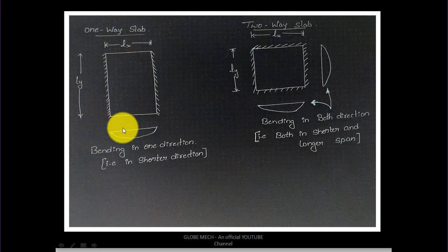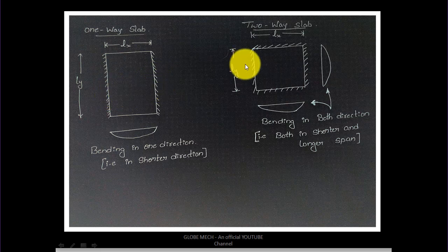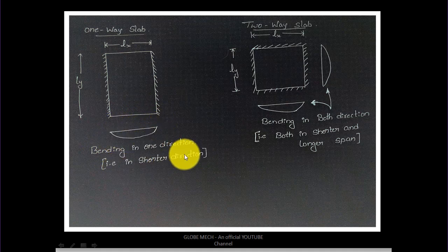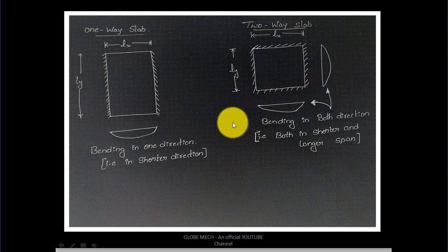In a one-way slab, bending takes place in only one direction — the shorter direction. Also, a one-way slab is supported only on two supports. In a two-way slab, the slab is supported on all four sides, so bending takes place in both directions — that is, along the shorter span and the longer span.